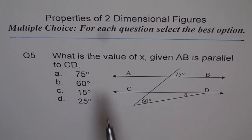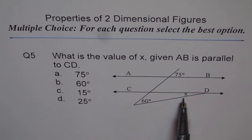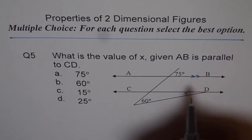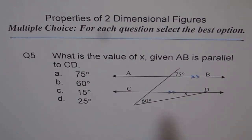It says, what is the value of X given AB is parallel to CD? So these two lines are parallel. You need to find what is the value of X. So how will you do it?